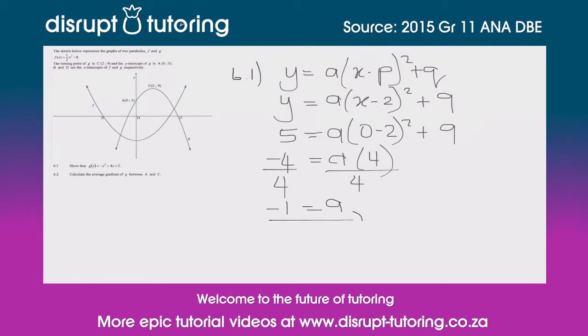Now we know what a is, we know what p and q are, so let's see what we get. Therefore, g(x) = -(x - 2)² + 9. But we're not at our answer yet because it's not in the form that they've asked us to solve it for. So let's expand that bracket to get the answer they're looking for.